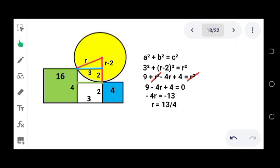r is just equals to 13/4. So since we now have the measure of the radius, we can now find the area of the circle. Area of the circle is equals to πr². We substitute π and then the radius is 13/4 squared. The area is equals to 169π/16.